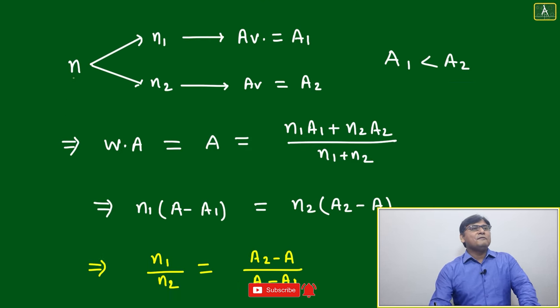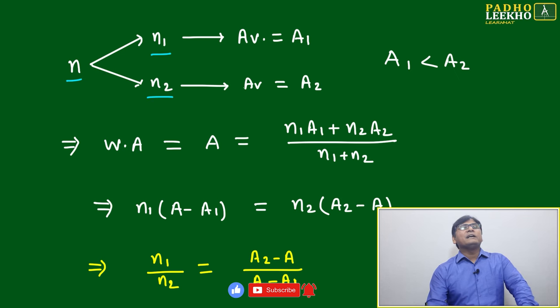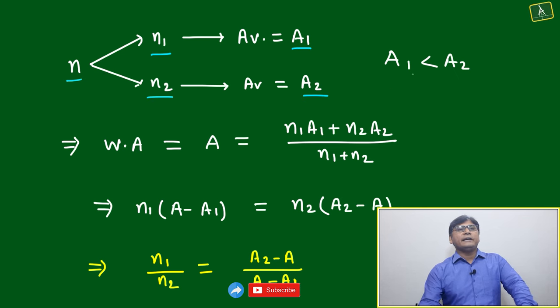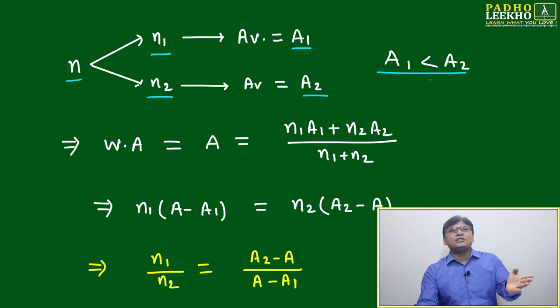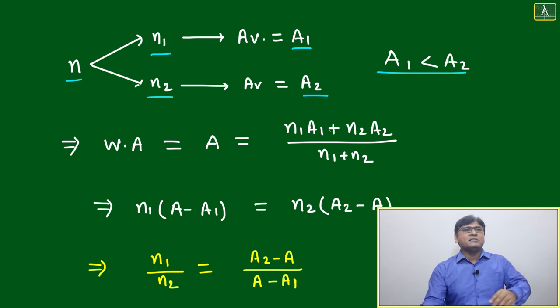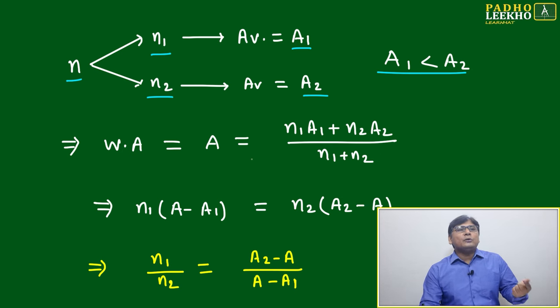We'll try to understand a little bit more. If n is divided in two groups n1 and n2, where average is a1 and a2, with a1 less than a2. Any order you can follow, just for understanding we are following a1 is less than a2. Weighted average will be equal to A = (n1*a1 + n2*a2) divided by (n1 + n2).